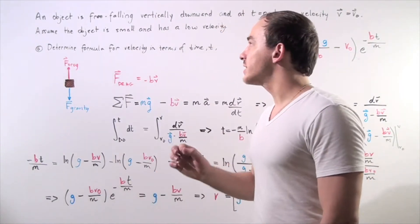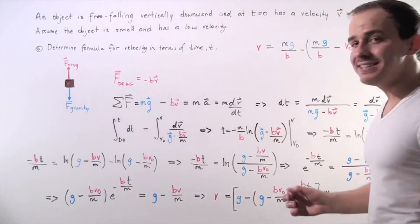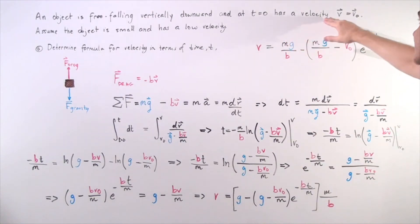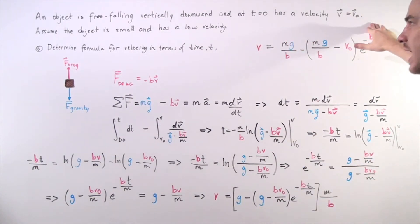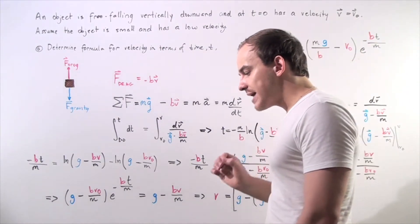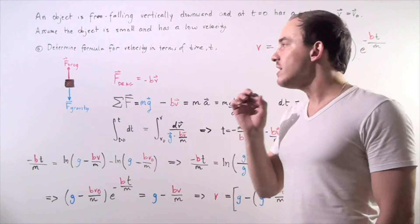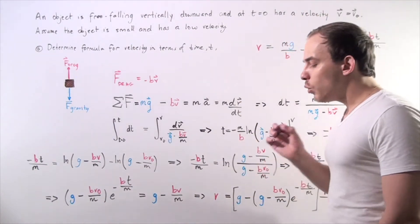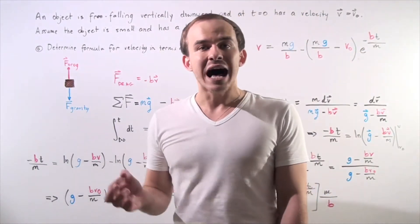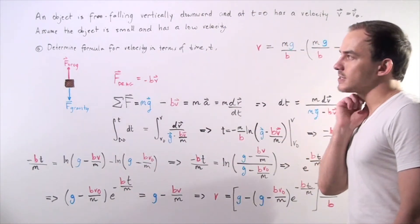Let's suppose that an object is free falling vertically downward and at time equals zero has a velocity of v equals v naught. We're making the assumption that our object is small and has a low velocity. We want to determine what the equation for velocity with respect to time is.